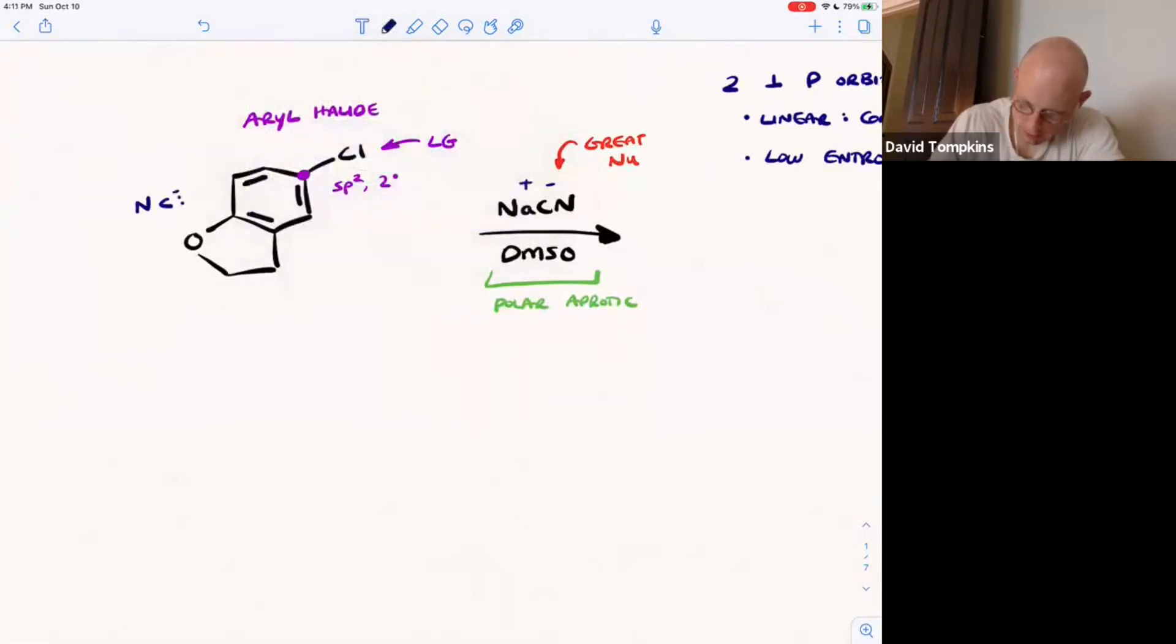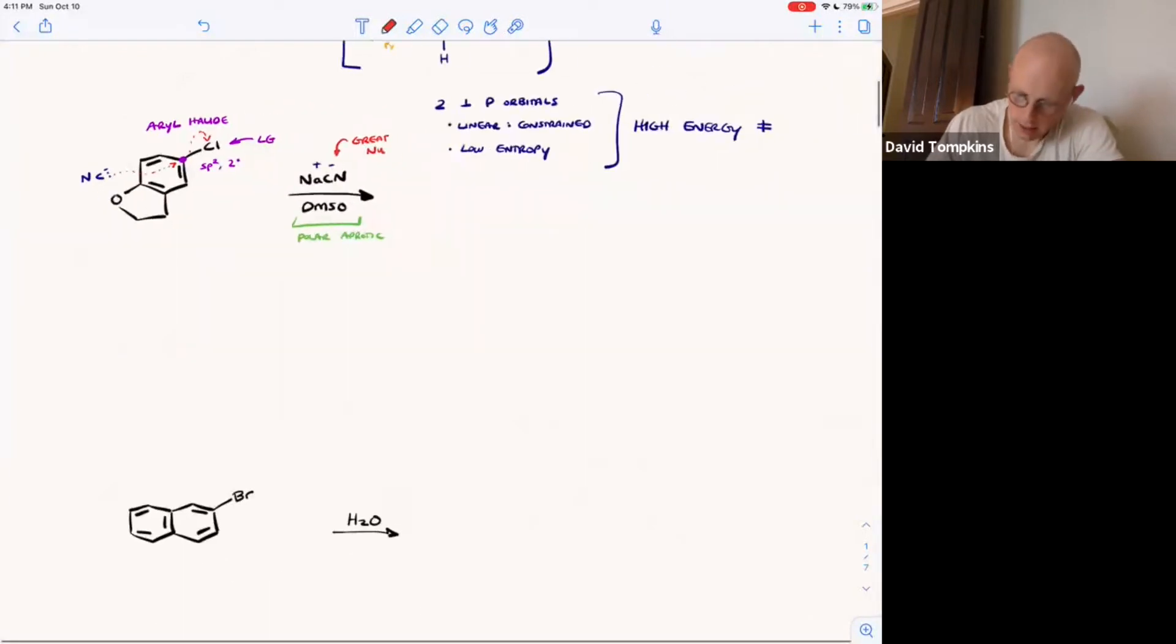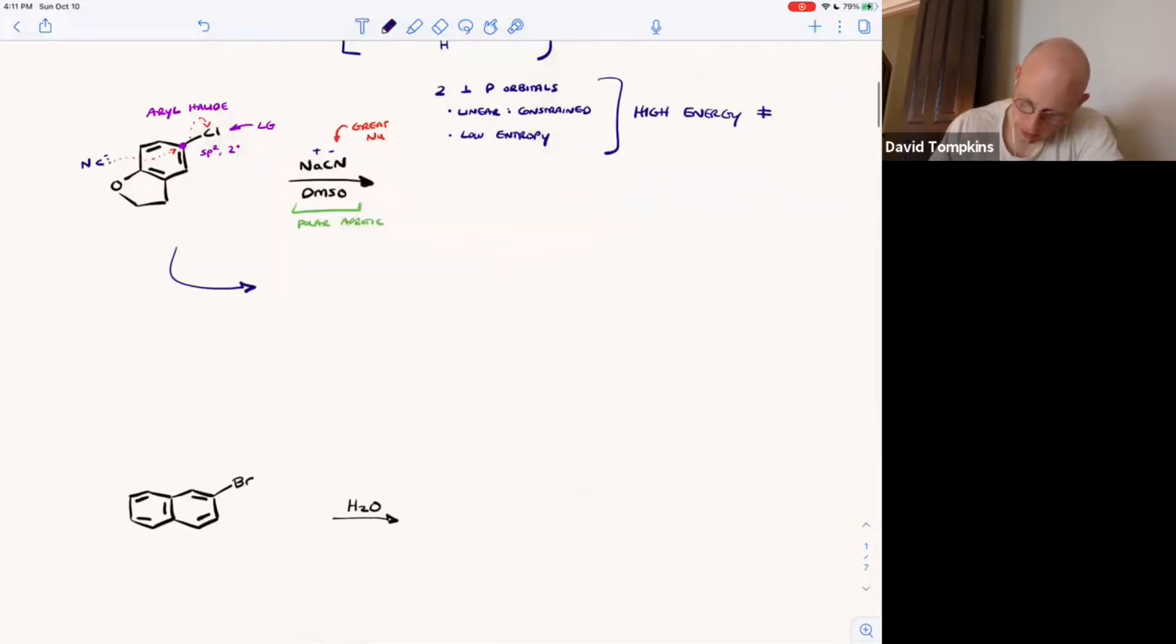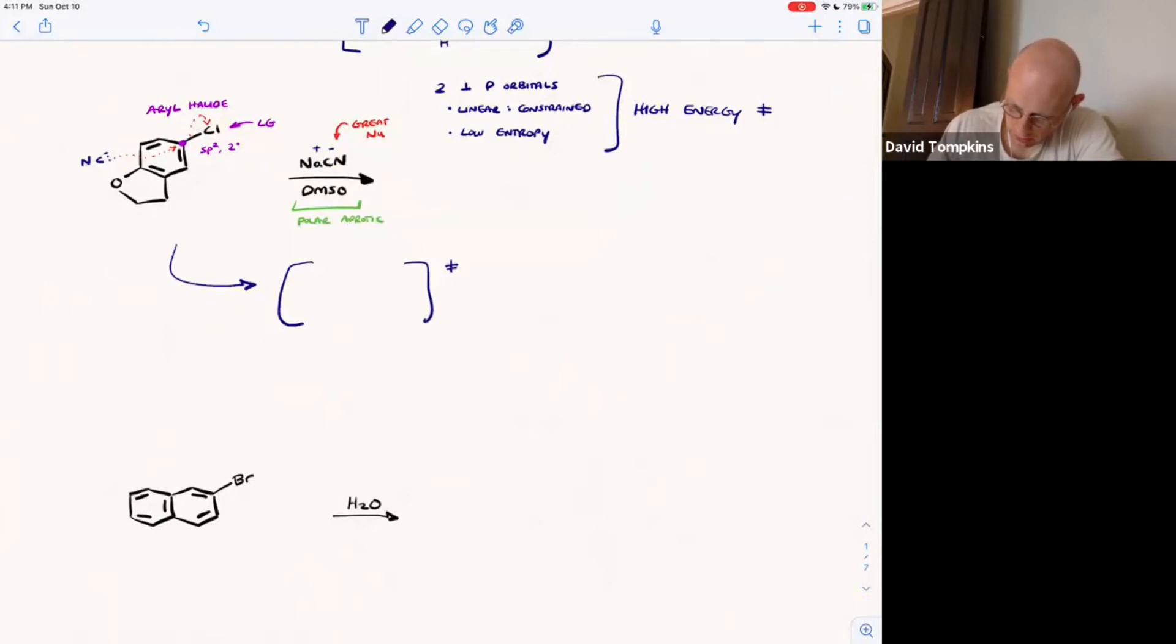If cyanide were to attack, it would have to do so like this, where it attacks from the back face, anti to the leaving group, and kicks out the chloride. And once again, let me just draw that with dotted lines. It doesn't really occur. It's too slow. So this would go through some transition state, which is unstable. We're not even going to worry about drawing it. It's the same argument as the one above.